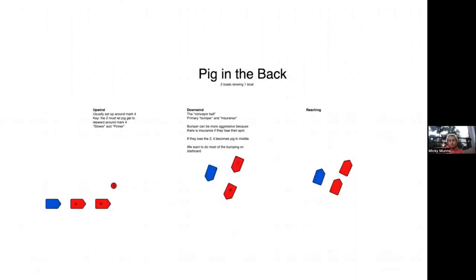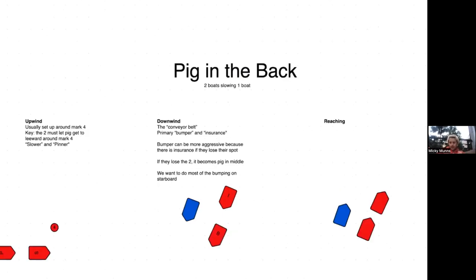Pig in the back is two boats slowing one boat. Just like all our other pig drills, you should rotate the order every once in a while so the team should change. But unlike the other pig exercises, this is not a drill for changing the order of the race. This is a drill with the goal of slowing the pig as much as humanly possible.